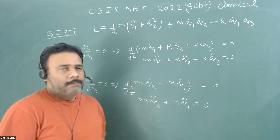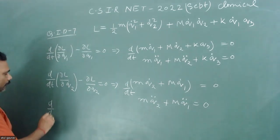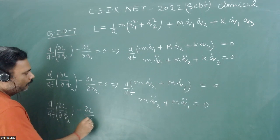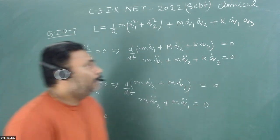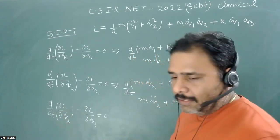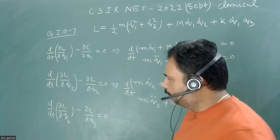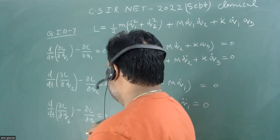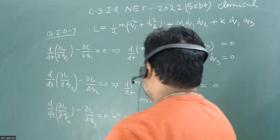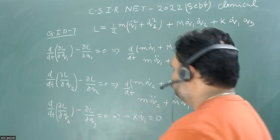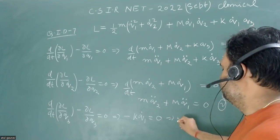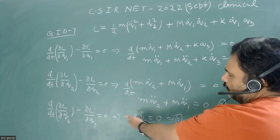Now for Q3: d/dt of (∂L/∂Q3-dot) minus (∂L/∂Q3) equals zero. Surprisingly, there is no term related to Q3-dot in the Lagrangian — which is a really unusual thing — but we proceed mathematically. So ∂L/∂Q3-dot vanishes, and ∂L/∂Q3 gives minus K·Q1-dot equals zero. Now we solve equations 1, 2, and 3.